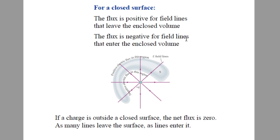For a closed surface, the flux is positive if the electric field lines are leaving the surface, and negative if field lines are going into the surface. If the charge is outside a closed surface, the net flux is zero — because the incoming flux and outgoing flux are equal. So charge outside the surface does not contribute to the total flux of a closed surface.